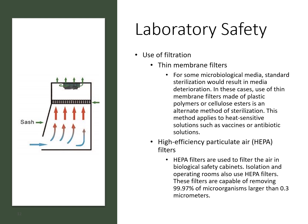HEPA filters are typically used in biological safety cabinets. The air flows in through the bottom under the sash, goes up through the top, passes through the filter, and is circulated either outside or back into the room. This type of filter will typically remove about 99% of microorganisms that are larger than 0.3 micrometers.